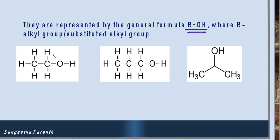One hydrogen of ethane when replaced by OH gives ethanol. Similarly, with three carbons the respective hydrocarbon is propane; one hydrogen of propane replaced by OH gives propanol. If we take isopropane and replace its hydrogen with OH, the resulting alcohol is isopropanol.